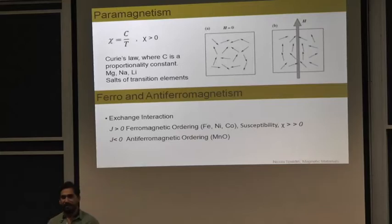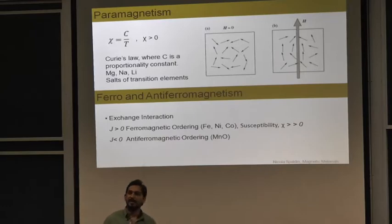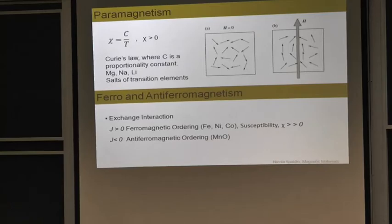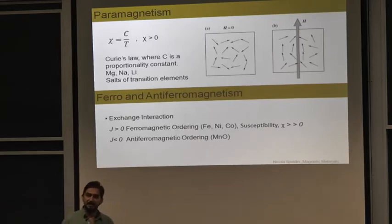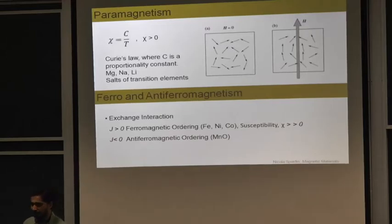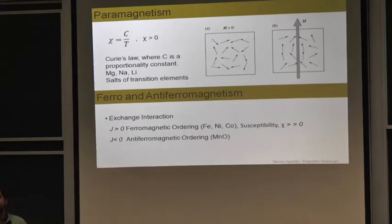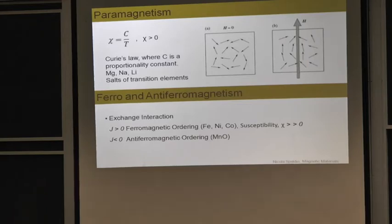Paramagnetism occurs when there is partial cancellation of the net magnetic moments. Partial cancellation means the system still has a magnetic moment. When this happens, the system could be paramagnetic or ferromagnetic. In paramagnetism, the magnetic moments of all atoms in the system are weakly coupled to each other, so thermal agitation causes a random alignment. As you can see in the figure, if there is no applied field, all the magnetic moments of the system are randomly aligned in random directions.